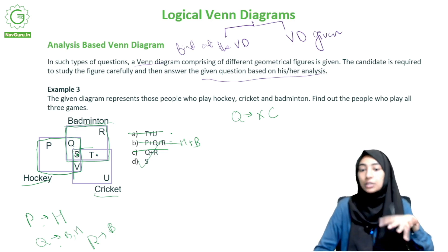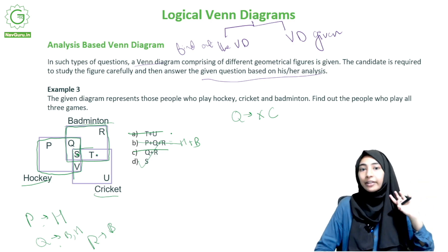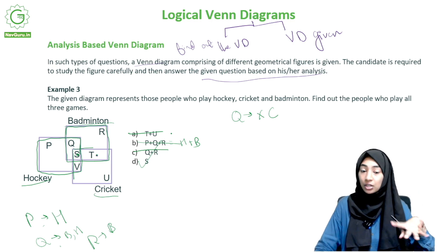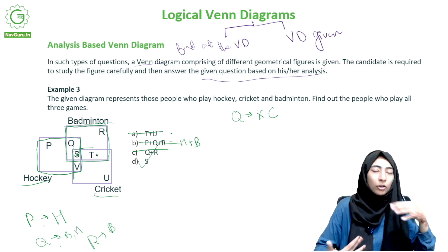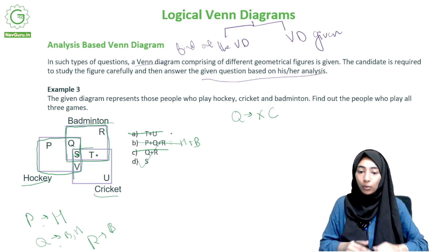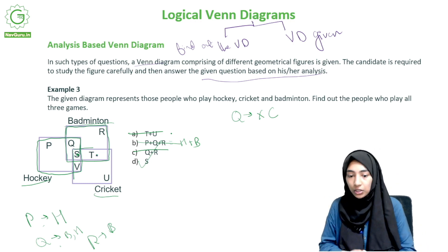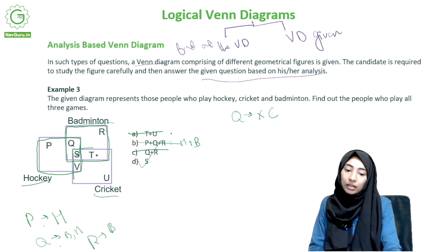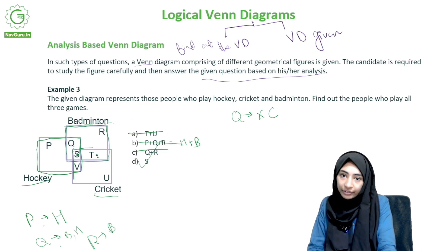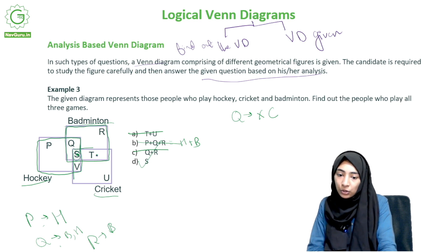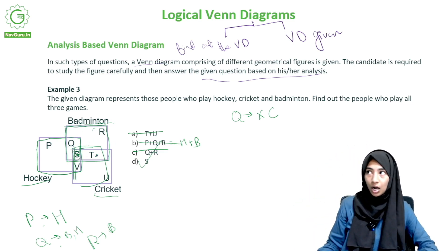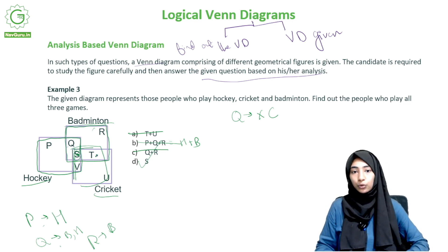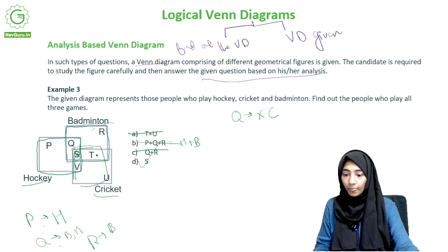For Venn diagram questions it is better not to rely on the options - looking at options makes it more time-consuming. It's always better to just look at the figure and figure it out directly. If we just looked at the figure without options, we'd immediately see S is contained in all three boxes. You can get answers much faster that way.